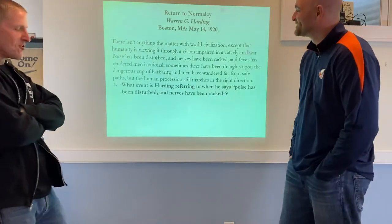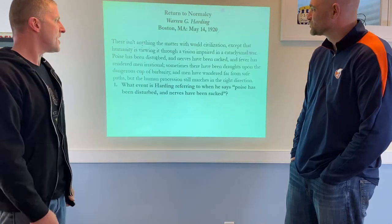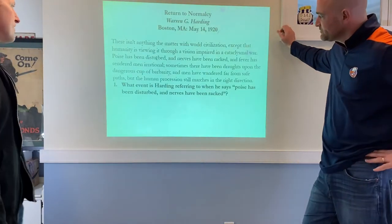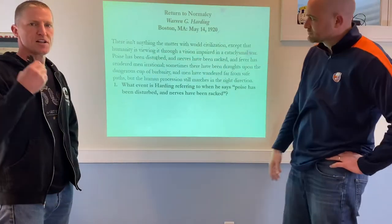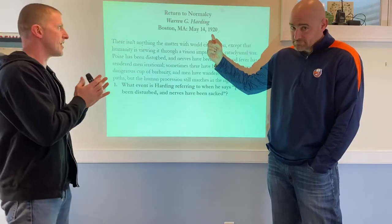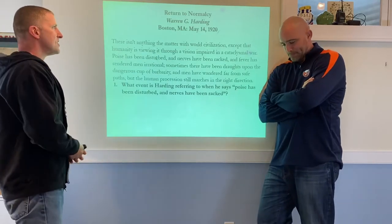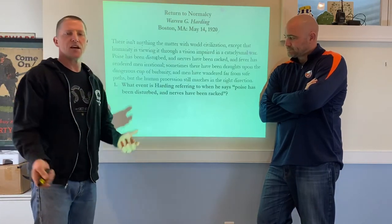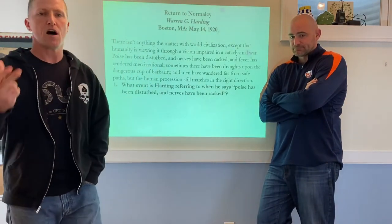Moving to Harding's inaugural speech — this was an assignment posted on Google Classroom. The first question: what event is Harding referring to when he says 'poise has been disturbed, nerves have been racked'? When looking at a document, first consider the date. We're just getting out of World War One — the Treaty of Versailles was signed in 1919. What poise has been disturbed? What nerves have been racked? This refers to sending our sons, fathers, and brothers over into war.